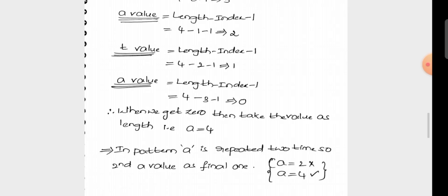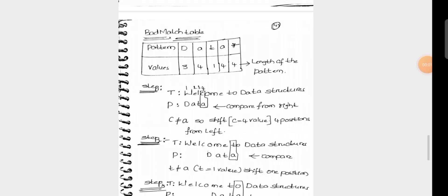After constructing the bad match table, we align the pattern string with the text string in the first step, then move to the next step, and then align in the last position of the data.